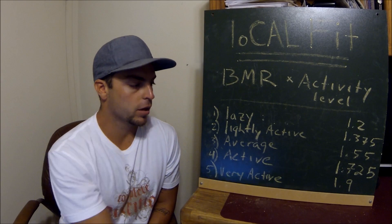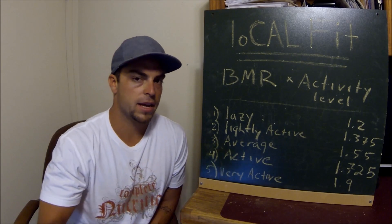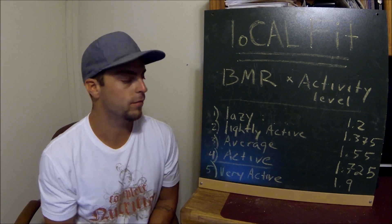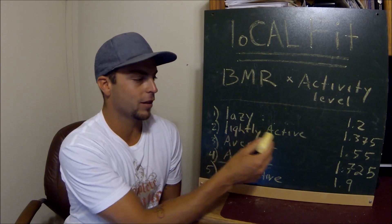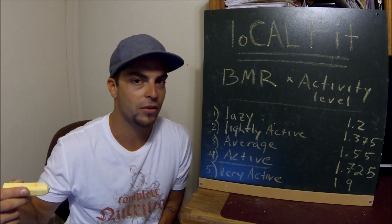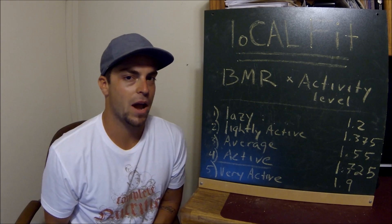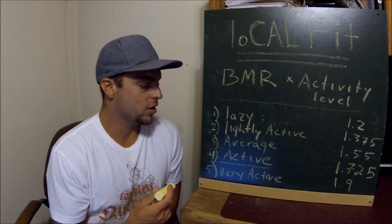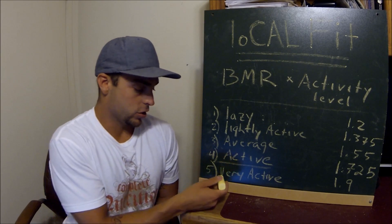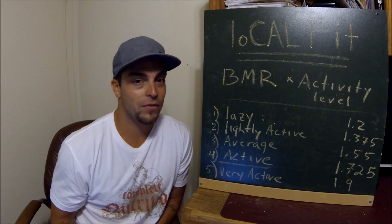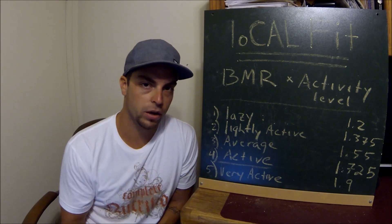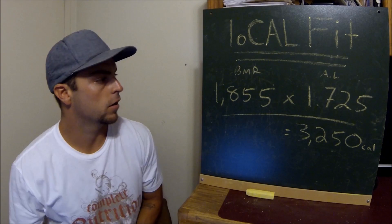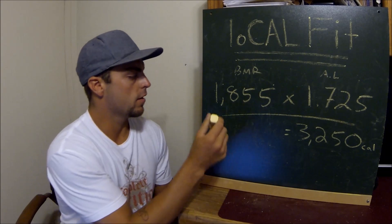And if you're really active — like an athlete — you multiply by 1.9. In my case I'm going with active. This is where you really don't want to mess up: if you're lazy, don't inflate yourself to lightly active, because that'll give you more calories than you're actually burning and you'll be working backwards. You need to swallow your pride and be realistic. I'm going to multiply my BMR by 1.725.